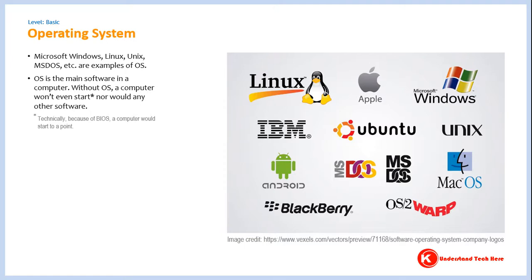The operating system is the main software in a computer. It is the first software that starts when we open a computer. The operating system makes it possible to start and use other software like Microsoft Word, Google Chrome, etc. When you shut down the computer, the reverse happens — all other software closes first, and in the end the operating system closes.